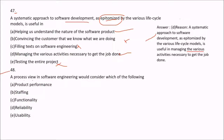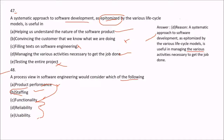Question 48: A process view in software engineering would consider which of the following? Options include product performance, staffing, functionality, reliability, and usability. Performance, functionality, reliability, and usability are non-functional requirements. Staffing is in the process view — so the answer is staffing.